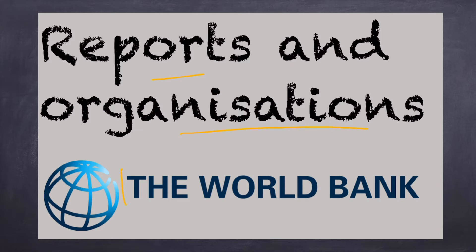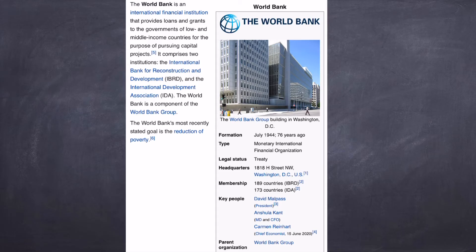The first thing we will do is the World Bank. The World Bank is an international financial institution that provides loans and grants to governments of low- and middle-income countries, for example Bhutan, Sri Lanka, etc., so that there can be development and living standards can increase.